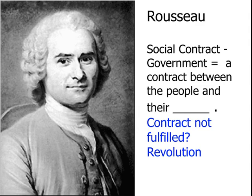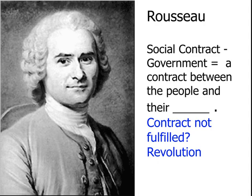Jean-Jacques Rousseau came up with the idea of the social contract. Instead of believing in an absolutist government where God gives a ruler the divine right to rule, Rousseau believed a government's right to rule came from a contract between the people and their leader. If either side felt the contract wasn't being fulfilled — that the government wasn't taking proper care of the people — they had the right to break that contract, choose a different leader, and even revolt. This was considered a very radical idea.